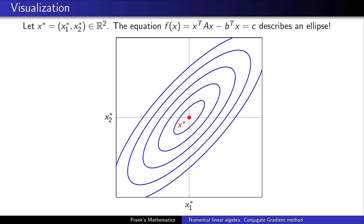Let's visualize this with a two-dimensional example. Our optimal point is (x1*, x2*) in R^2, and we look at the contour lines where F is constant. The equation F(x) = constant Z describes an ellipse. In the middle we have our optimal point x*, and the blue lines circled around x* are ellipses — if you travel on one of these lines, the function value of F stays constant.